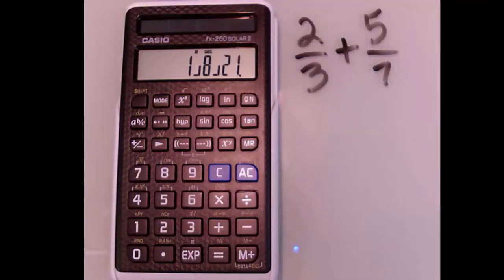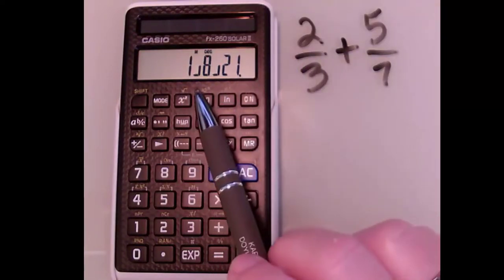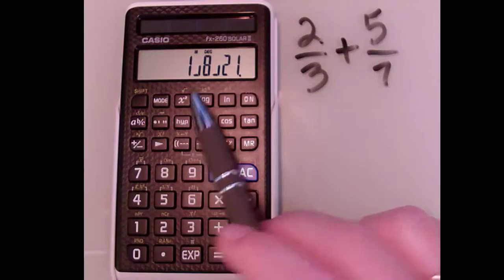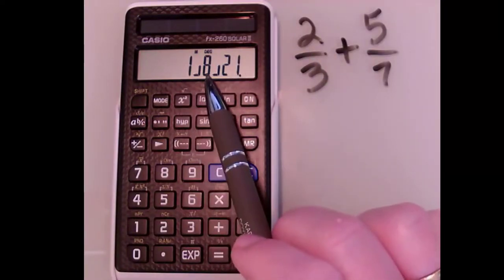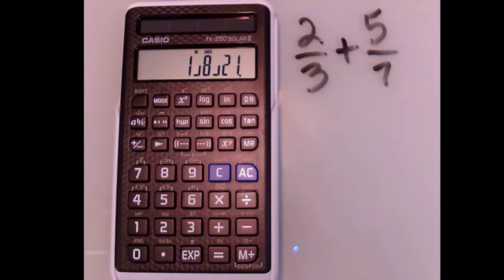notice my answer is in fractional form, and it has 3 parts instead of 2 because this is now a mixed number. The way to read this is that's the whole, and this is the fractional part. So the answer is 1 and 8/21.